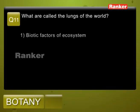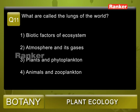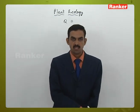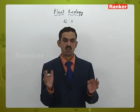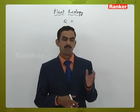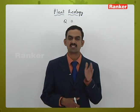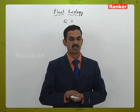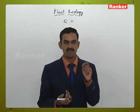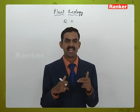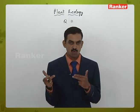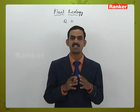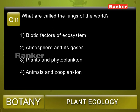Question 11: What are called the lungs of the world? Options: 1) biotic factors of ecosystem, 2) atmosphere and its gases, 3) plants and phytoplankton, 4) animals and zooplankton. The ones releasing oxygen into the environment are called lungs of the world. Plants release oxygen and absorb carbon dioxide. Phytoplanktons are small plants living inside water, also taking CO2 and releasing oxygen, purifying the aquatic environment. Correct answer: 3.